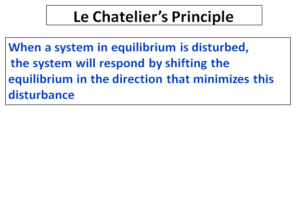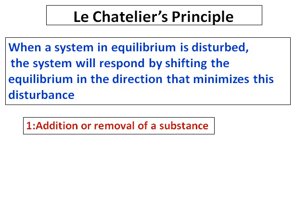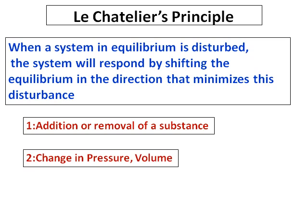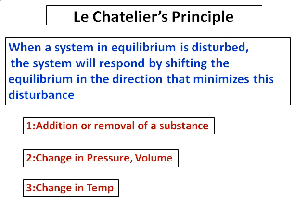What are the ways a chemical equilibrium can be disturbed? Number 1 is addition or removal of a substance. Number 2 is change in pressure or volume. And the third is change in temperature. Let us see how each one of these affects the equilibrium.